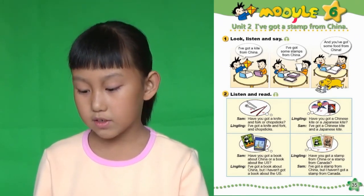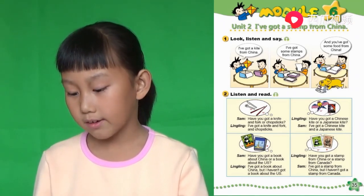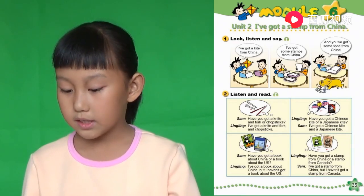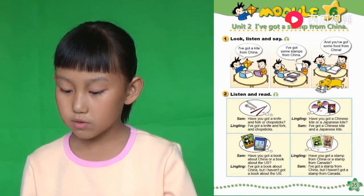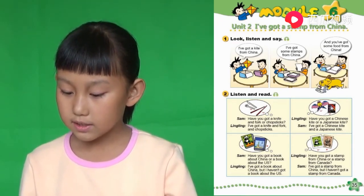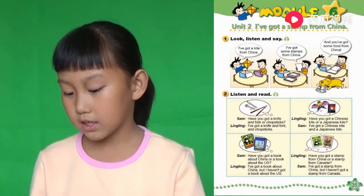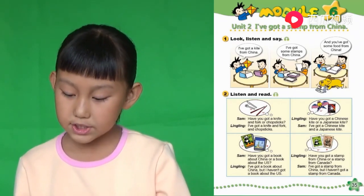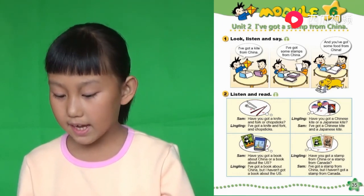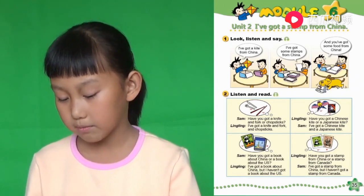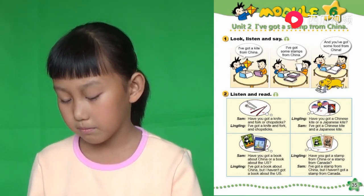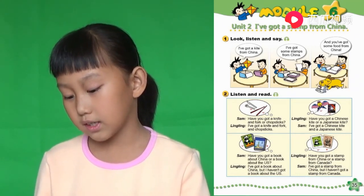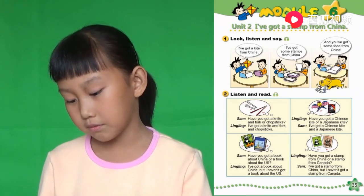还有一个中国风筝。 Have you got a Chinese card or Japanese card? 你有一个中国风筝，和一个日本风筝。